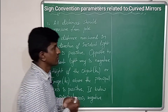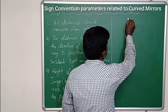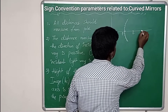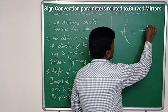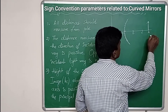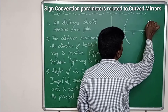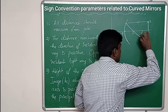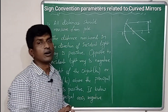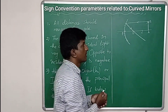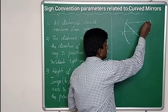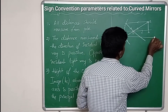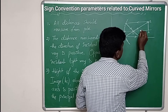First, in the case of a concave mirror. This is a concave mirror with focal point and center of curvature. If an object is placed here, a light ray parallel to the principal axis is incident on the mirror and gets reflected. We know that a parallel light ray after reflection always passes through the focal point. The second light ray incident from the focal point then becomes parallel to the principal axis after reflection.